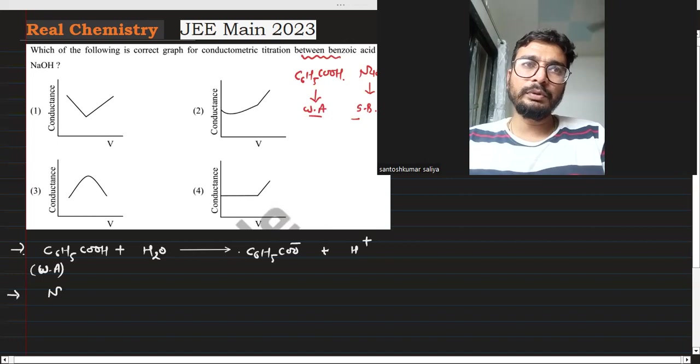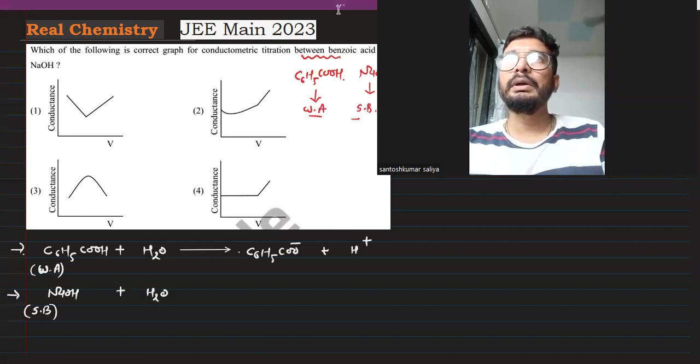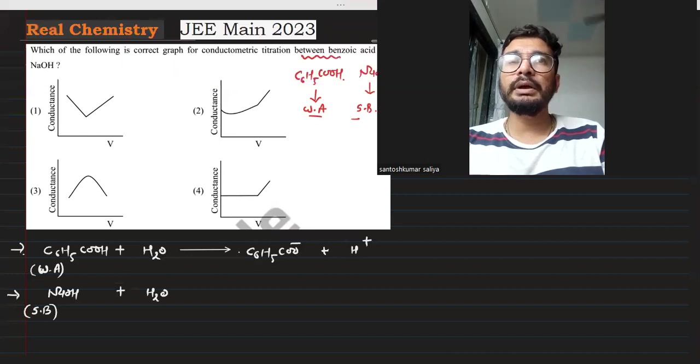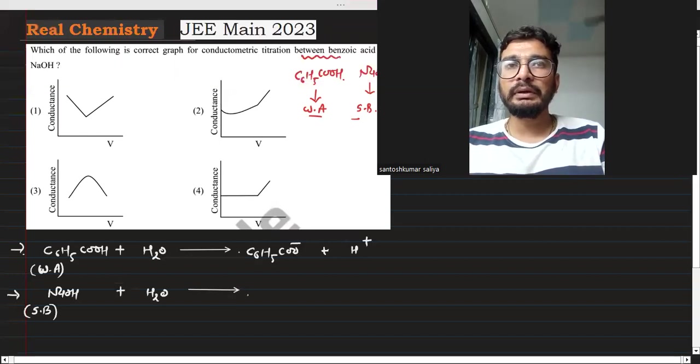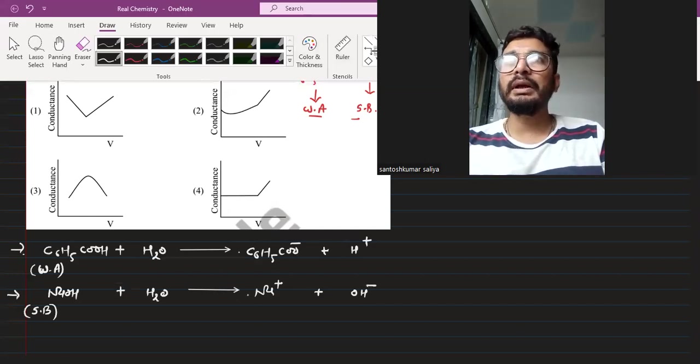In contrast, NaOH is a strong base. Strong bases dissociate completely 100% in water. So NaOH gives Na+ and OH-. This is the solution that we have.